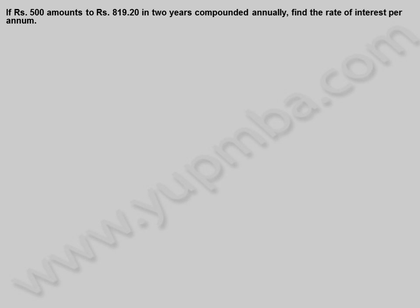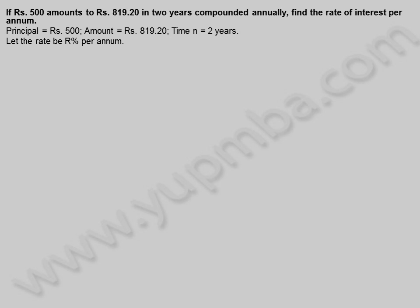If 500 rupees amounts to 819.20 rupees in 2 years compounded annually, find the rate of interest per annum. Principal is equal to 500 rupees, amount is equal to 819.20 rupees, time n is equal to 2 years. Let the rate be rate percentage per annum. Amount is equal to principal into 1 plus rate by 100 whole power n.